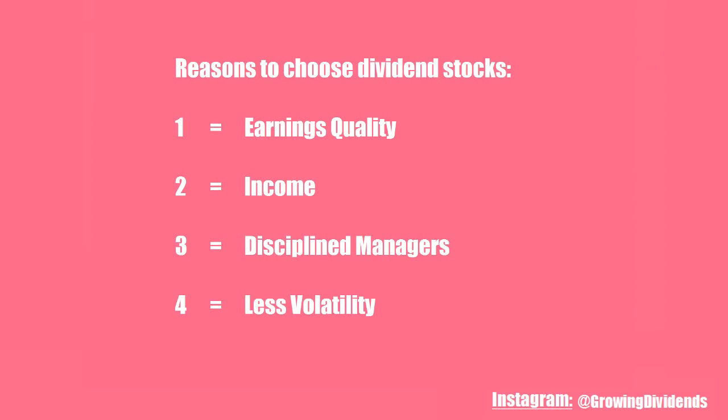Disciplined Management: companies that promise their owners regular cash payments have less potential to make unforced errors by acquiring competitors at high prices or throwing shareholders' cash at projects with questionable returns. Less Volatility: dividend paying stocks tend to be less volatile than stocks that don't pay dividends, meaning the difference between their highs and lows is smaller. Although dividend paying companies have historically outperformed companies that don't pay dividends, this doesn't mean you should buy all stocks that pay dividends or buy a stock simply because it pays a higher dividend than another.